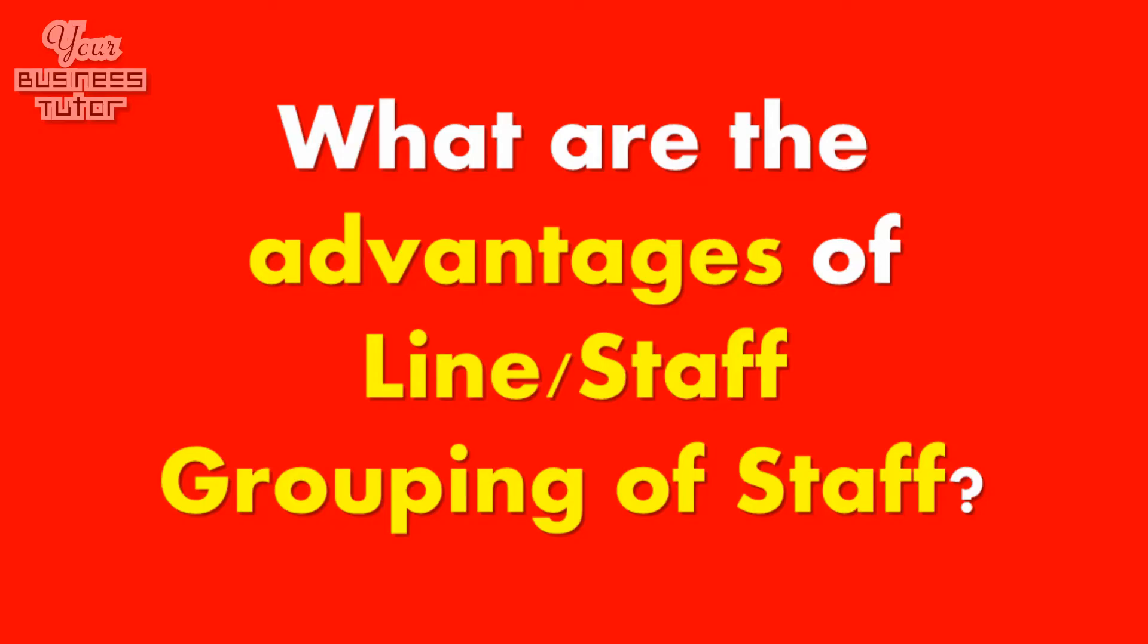This is an important point and one which we will explore further in our next question, which is, what are the advantages of line staff grouping? Given line staff grouping is, in effect, a combination of other groupings, it is easy to see where its strengths lie. By merging two opposing groupings, an organisation can take the best of both and eliminate the worst of each.